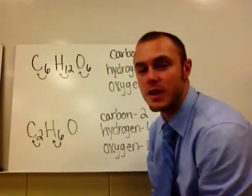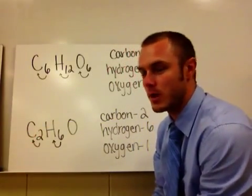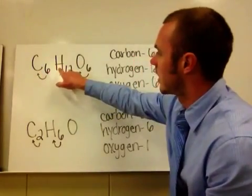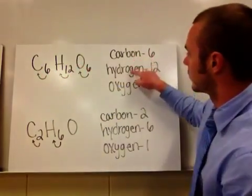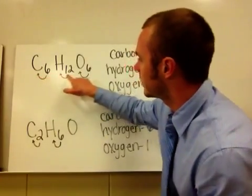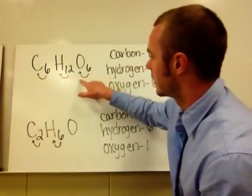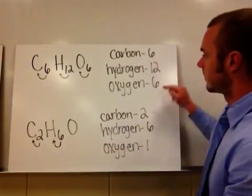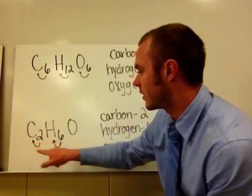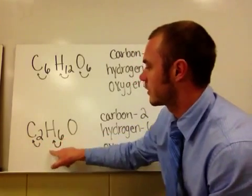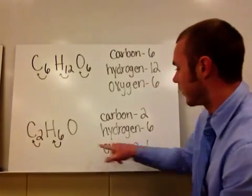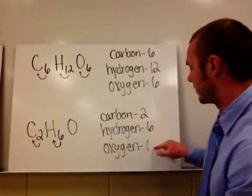The same rules apply to more complex molecules. For C6H12O6, the elements are carbon, hydrogen, and oxygen. That gives us six carbons, twelve hydrogens, and six oxygens. The six goes with the carbon in front of it, the twelve goes with the hydrogen in front of it, and then there's the oxygen by itself with an understood one behind it.